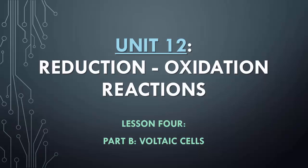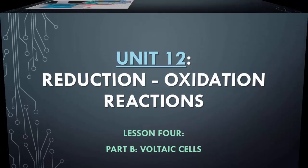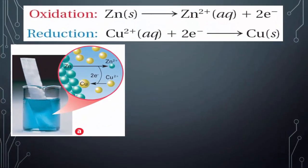This is Lesson 4, Part B: Voltaic Cells. We're going to elaborate on what we talked about in the last video. In the last video we mentioned a reaction between zinc and copper, which was part of Alessandro Volta's voltaic pile.